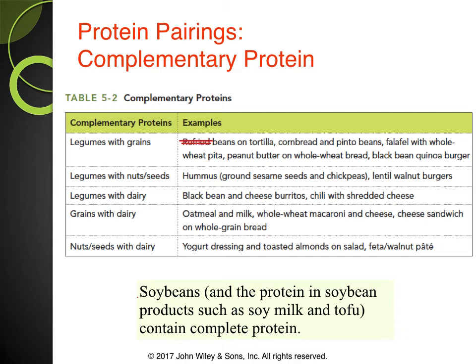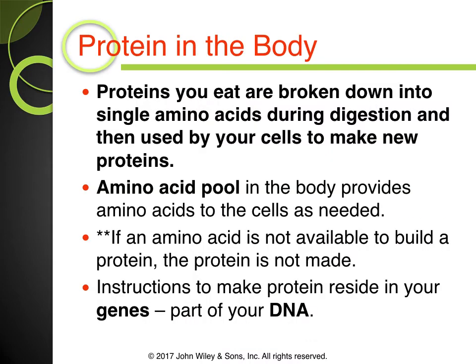Fun fact: soybeans and soybean products such as soy milk and tofu actually contain complete protein — so that's the exception. If you're vegan or vegetarian, make tofu your best friend. Proteins you eat are broken down into single amino acids during digestion and then used by your cells to make new proteins — that's why I called them Legos. An amino acid pool in the body provides amino acids that cells need. If an amino acid is not available, a protein cannot be made, so it's important we get all our essential amino acids from foods.